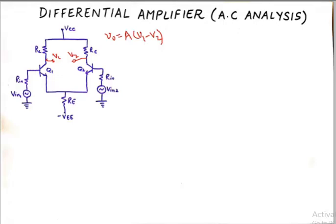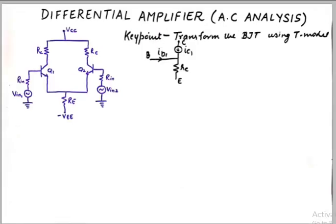Now that has already been discussed. In this tutorial we will talk about the AC analysis and some key points are mentioned here. If you wish to do the AC analysis the first key point is that you transform the BJT using T model.